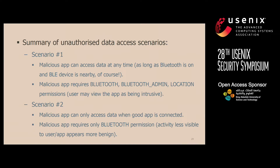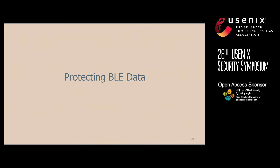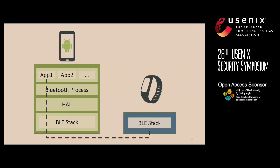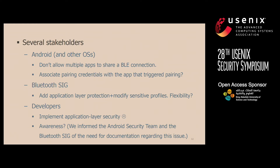We've seen that it is possible for unauthorized applications to access pairing-protected data from BLE devices. So our question would then probably be: what would we do to protect the BLE data? Ideally, what we want is a solution where protection extends from the BLE device all the way up to the application on the requesting device. The issue is that there are multiple stakeholders within the BLE ecosystem, and it's difficult to determine which stakeholder should be responsible for making the changes that would safeguard data.